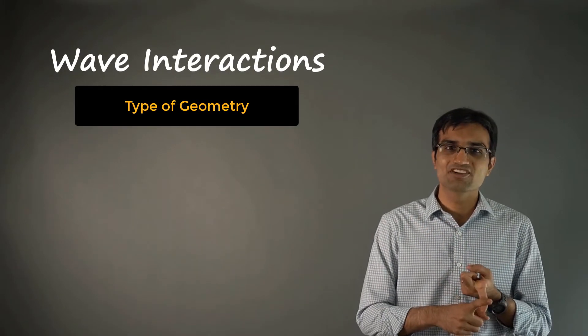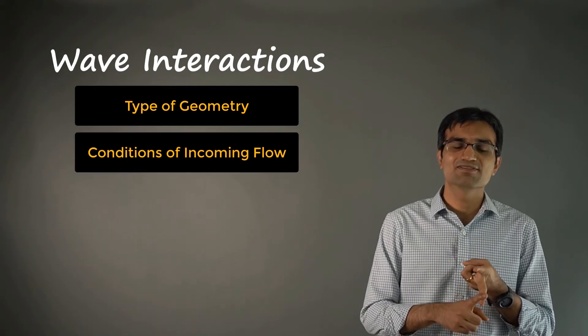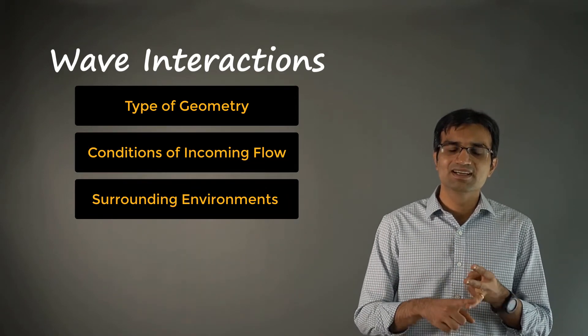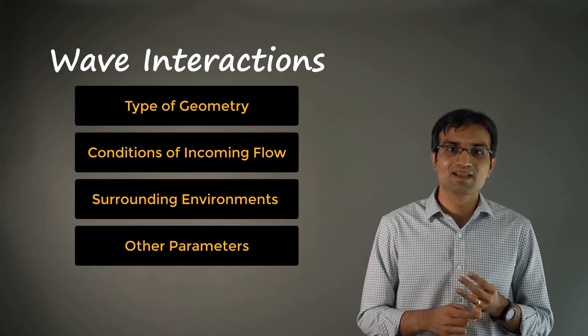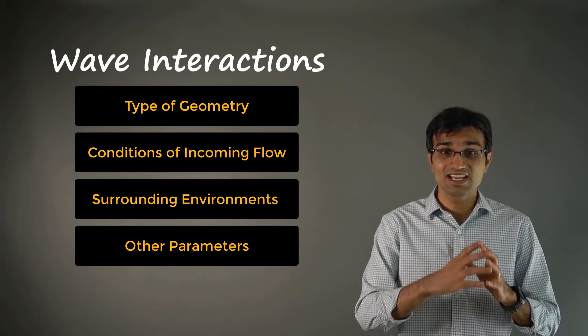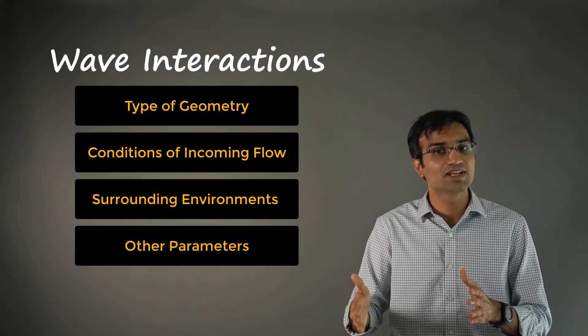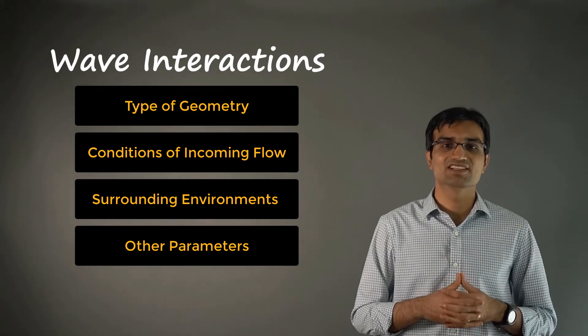Depending on the type of geometry, conditions of incoming flow, surrounding environment, and other parameters, we saw that the waves that are created at different locations in the flow field can intersect and interact with each other.